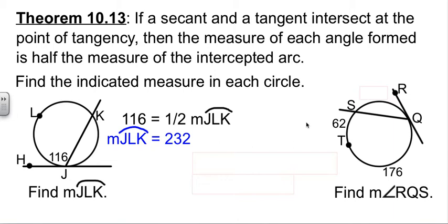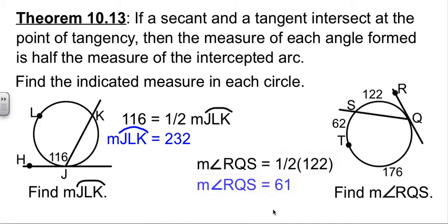Let's look at another one here. We have some information about these arcs, and our job is to find the measure of angle RQS. Since we know this arc is 176, and this one is 62, a little subtraction gets us the last one. It leaves 122. Now that we know that arc, our angle is half of the arc. So our angle is 61 degrees.